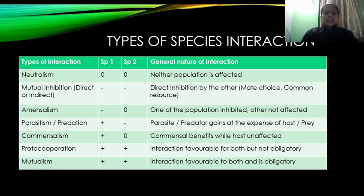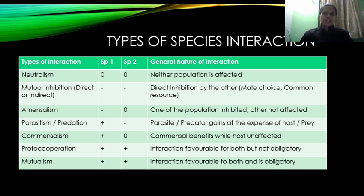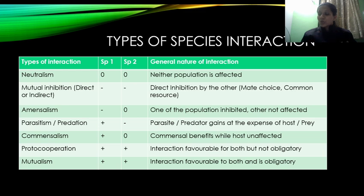फिर हम बात कर रहे हैं commensalism की। Commensalism में एक species को benefit होगा, दूसरे species को कोई फर्क नहीं पड़ेगा। The host is unaffected. This is commensalism। ये तो बस एक overview है ताकि आप समझो कि कितने-कितने प्रकार के interactions होते हैं।